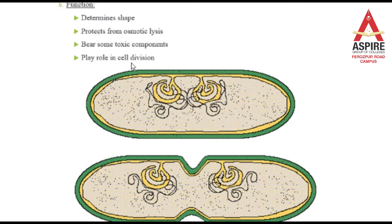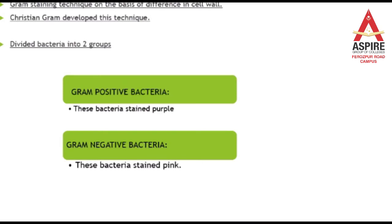The cell wall also plays a role in cell division. These are the functions of the cell wall: it gives the bacterial cells their shape, protects from osmotic lysis, prevents toxic components from entering, and helps the cells in cell division.